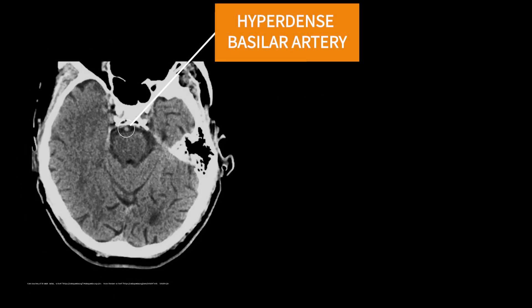Similar to the dense MCA sign in MCA infarctions, you can also appreciate a dense basilar artery sign in cases of posterior circulation strokes. These are more challenging to diagnose compared to the dense MCA sign. In brief, these are the CT signs of hyperacute or acute stroke. Whenever in doubt, we should never hesitate to perform a diffusion MRI, which is the gold standard in ischemic stroke diagnosis.